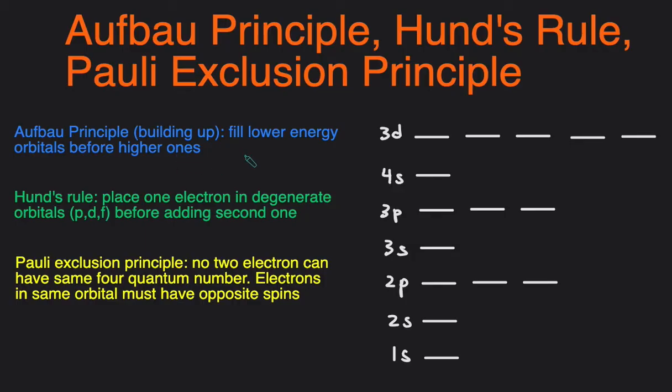Like when you write electron configuration, it goes 1s2, 2s2, 2p6. You see how you fill lower ones before higher ones, or when you look at an energy diagram, you have to fill these lower ones before you fill the higher ones.